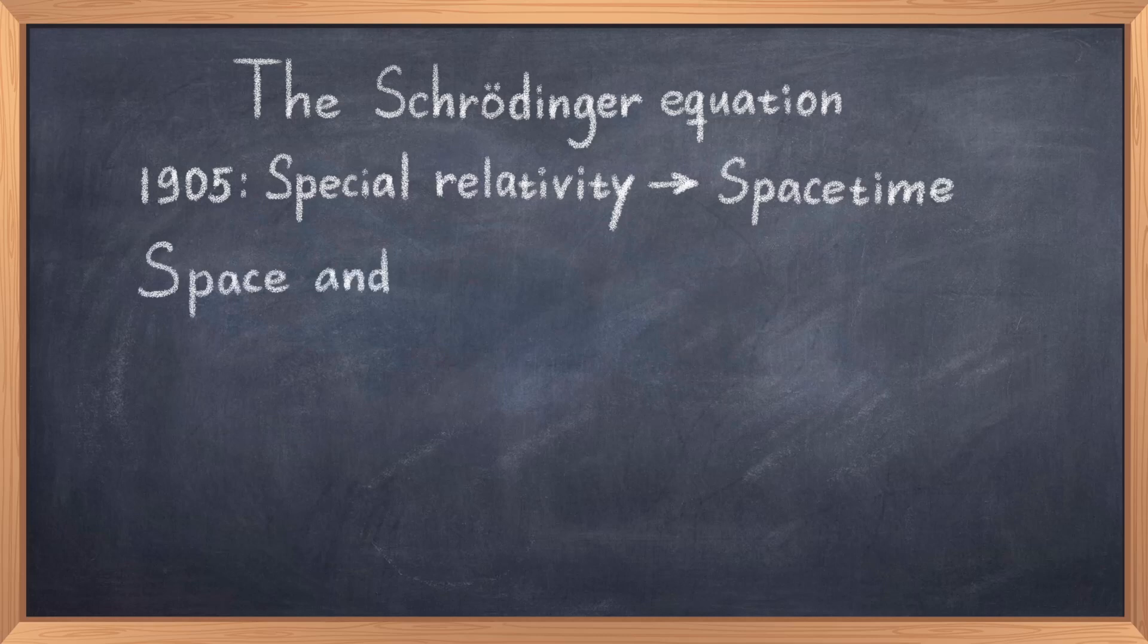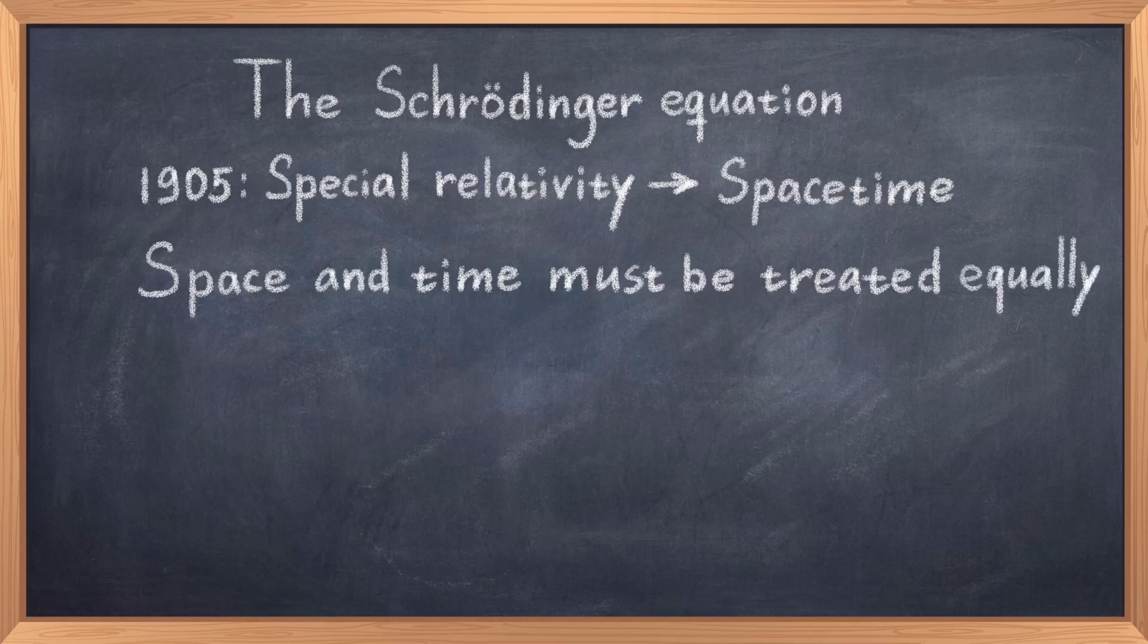We learned that to describe objects which move close to the speed of light we must consider spacetime as a united entity. Thus we must treat space and time on equal footing. This is the crux of the problem with the Schrödinger equation.